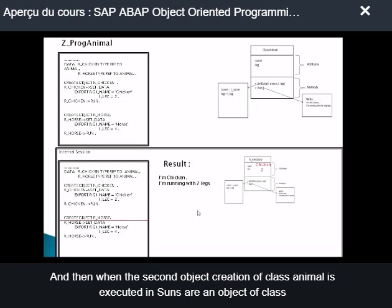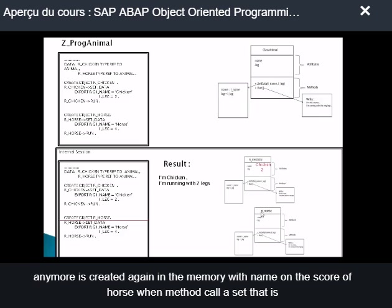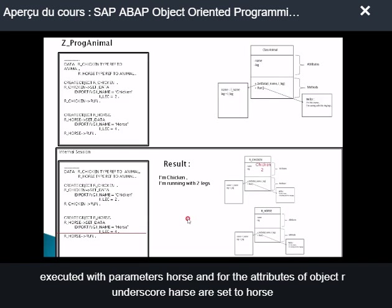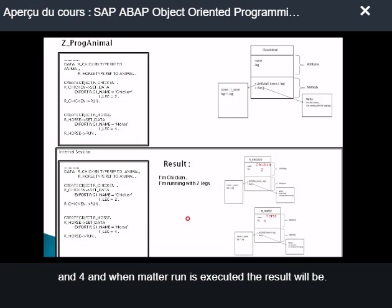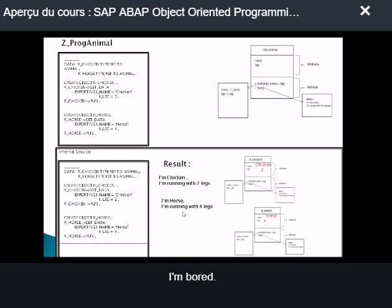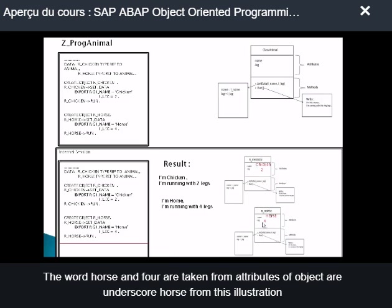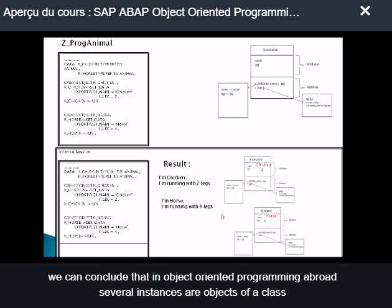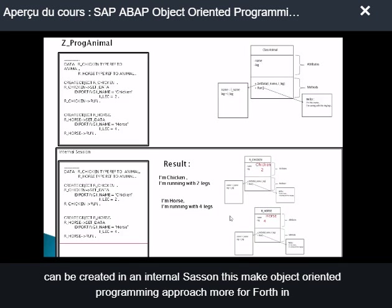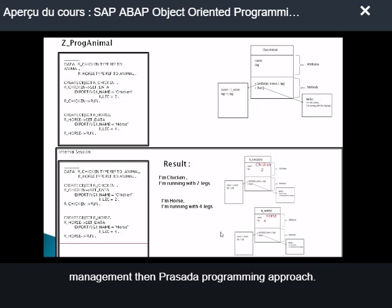When the second object creation of class animal is executed, a new instance is created in memory with name r_horse. When method set_data is called with parameters 'horse' and 'four', the attributes of object r_horse are set to 'horse' and 'four'. When method run is executed, the result is: 'I am horse, I am running with four legs.' From this illustration, we can conclude that in object-oriented programming, several instances or objects of a class can be created in one internal session, making OOP more powerful in data management than procedural programming.